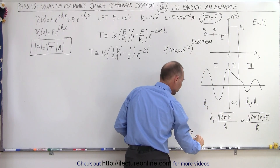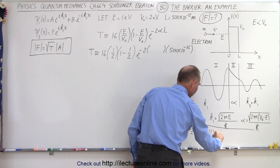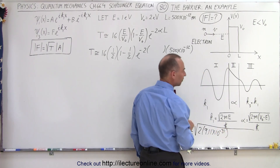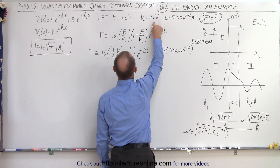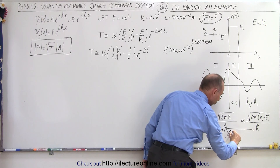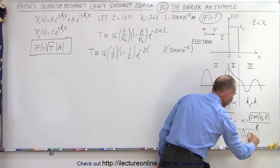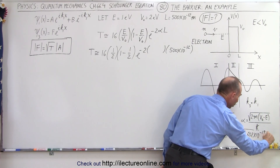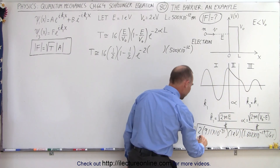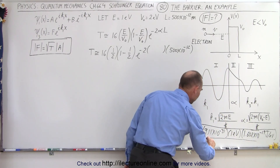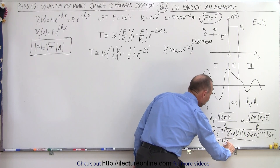Alpha is equal to the square root of 2 times the mass of an electron, which is 9.11 times 10 to the minus 31 kilograms, times the difference in energy — 2 electron volts minus 1 electron volt equals 1 electron volt. Here we must convert to joules: 1.602 times 10 to the minus 19 joules per electron volt. All of that goes under the radical, divided by h-bar, which equals h (6.626 times 10 to the minus 34) divided by 2 pi.